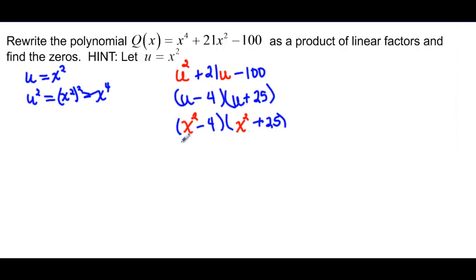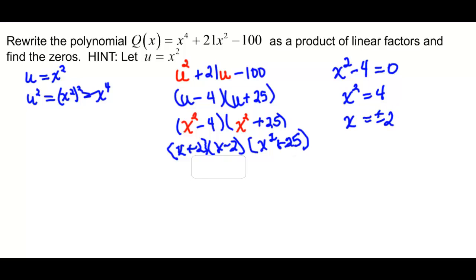So the x squared minus 4, we can actually factor further. It's a difference of squares. So we have x plus 2 and x minus 2. And those would be our linear factors. And then we've got this x squared plus 25. We can come back in there and make that linear in just a moment when we think about our zeros. So we have x squared minus 4 was the factor. And we want to set that equal to zero to find the zero. So we have x squared is equal to 4. And that means x would be equal to plus or minus 2. And if you look, there's our plus 2 and our minus 2. So those are our zeros.